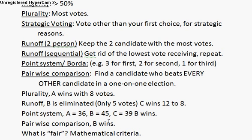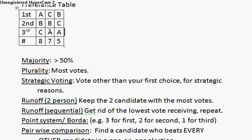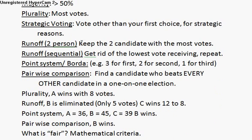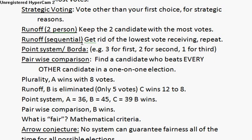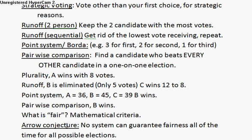These systems all have legitimate reasons you might consider using them depending on the type of election. Seeing this complexity arise from the simple question of voting, people started considering: what does the word 'fair' mean? What is a mathematical criterion for a fair election? Several points were postulated and agreed on — if you have a majority, you should win; you should never lose to someone you could beat head to head. This leads us to a famous result in voting theory called Arrow's conjecture: no voting system can guarantee fairness all the time for all possible elections.